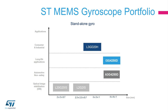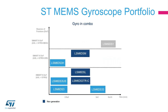ST offers the widest choice of full-scale ranges in the market, from 100 DPS suitable for image stabilization in digital still camera and video camera, up to 6600 DPS for improved user experience in gaming and user interface applications. ST's OIS gyroscope is the smallest package in the OIS market, offering an excellent rate noise density, top-level performance, and low power consumption. Each OIS gyroscope integrates a temperature sensor for best-in-class temperature compensation, improving long exposure time pictures.